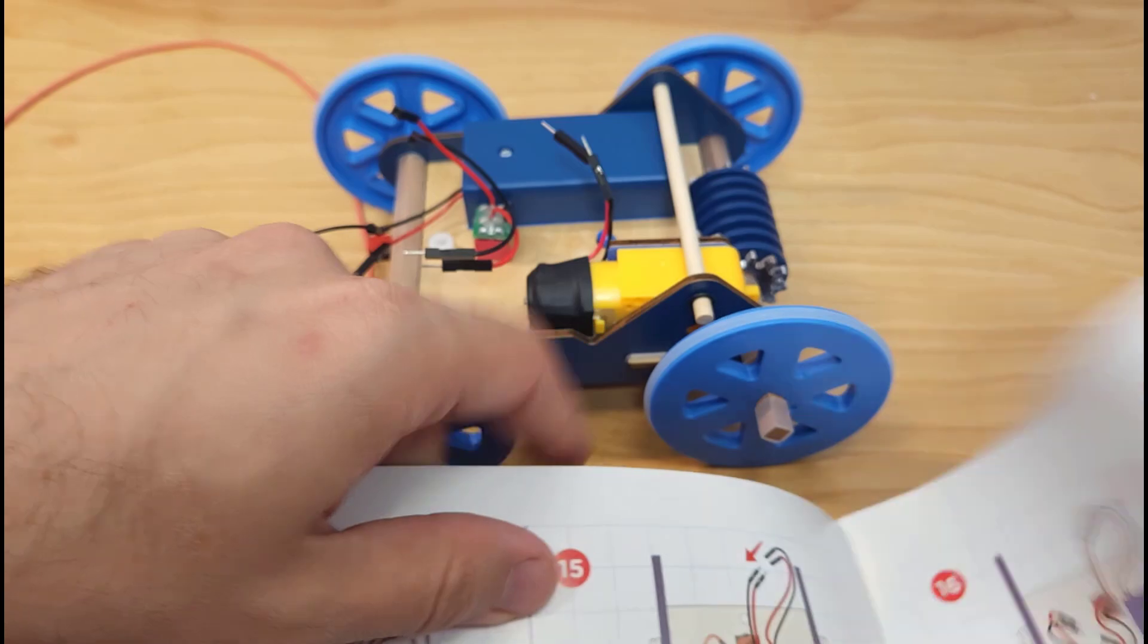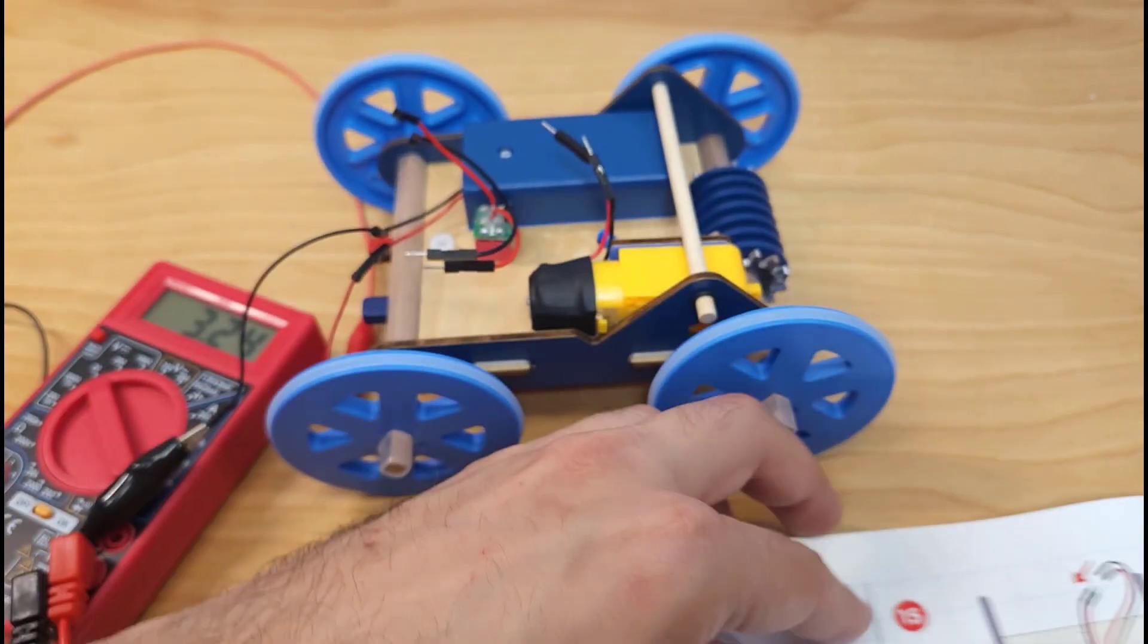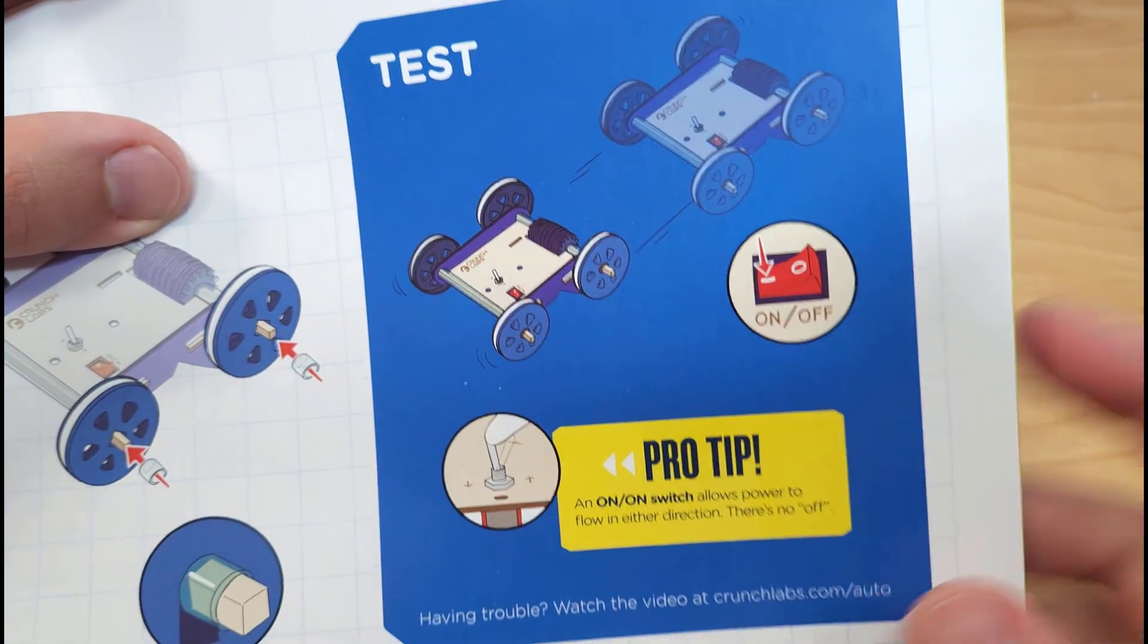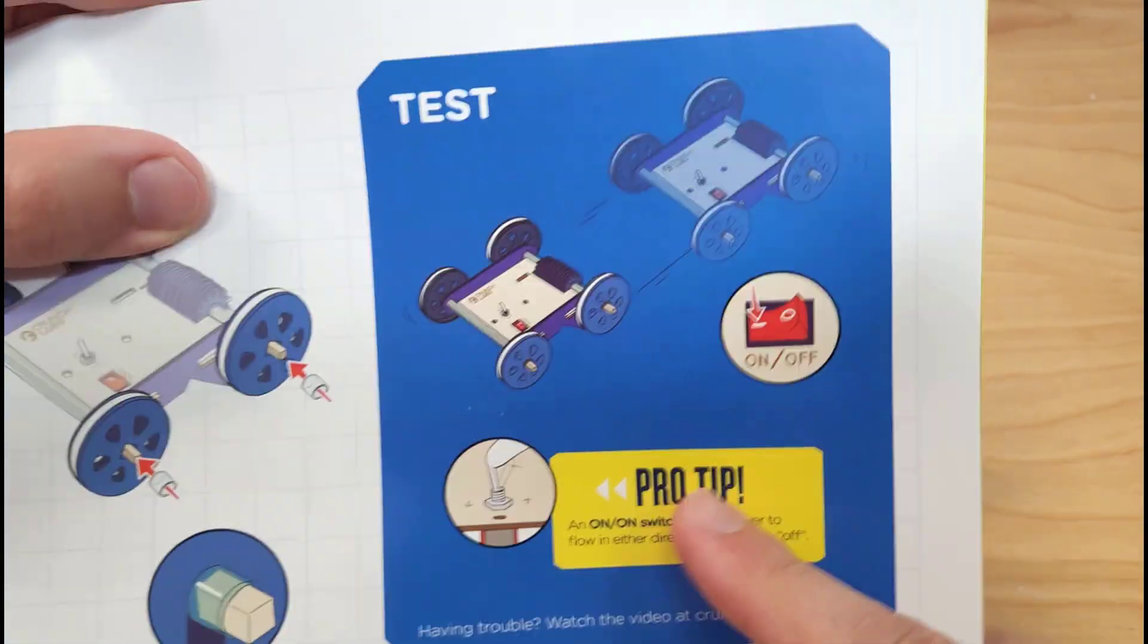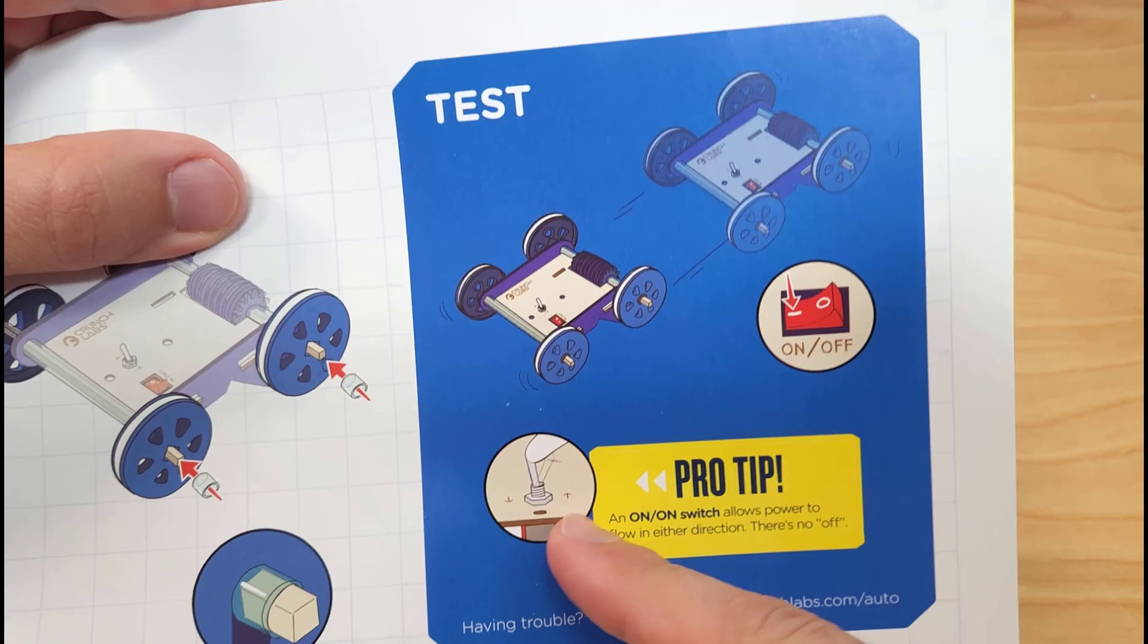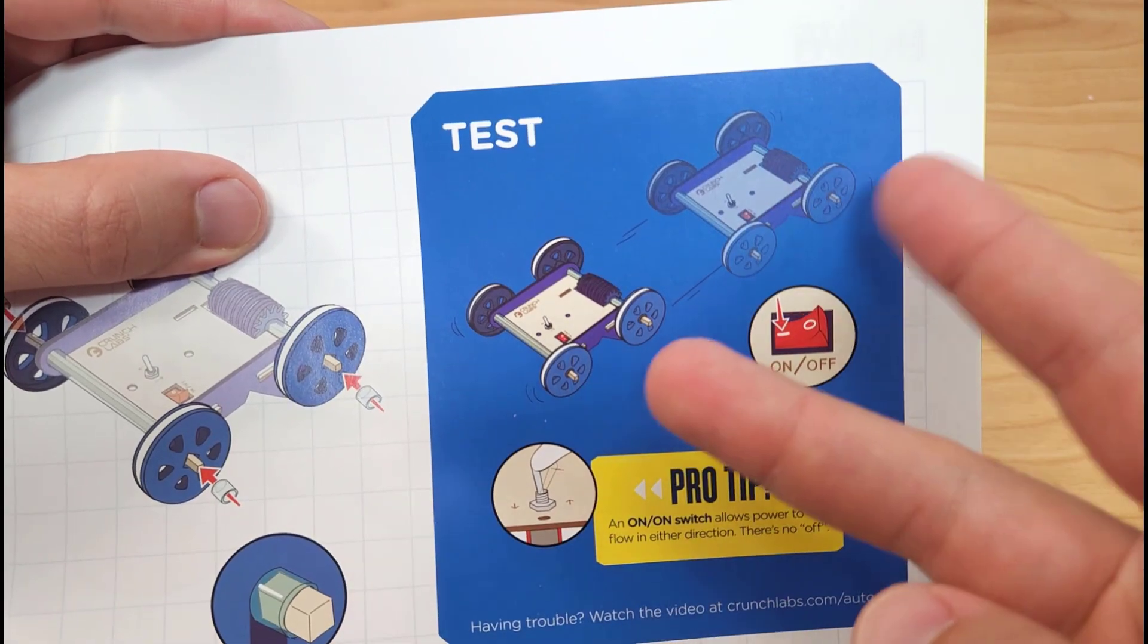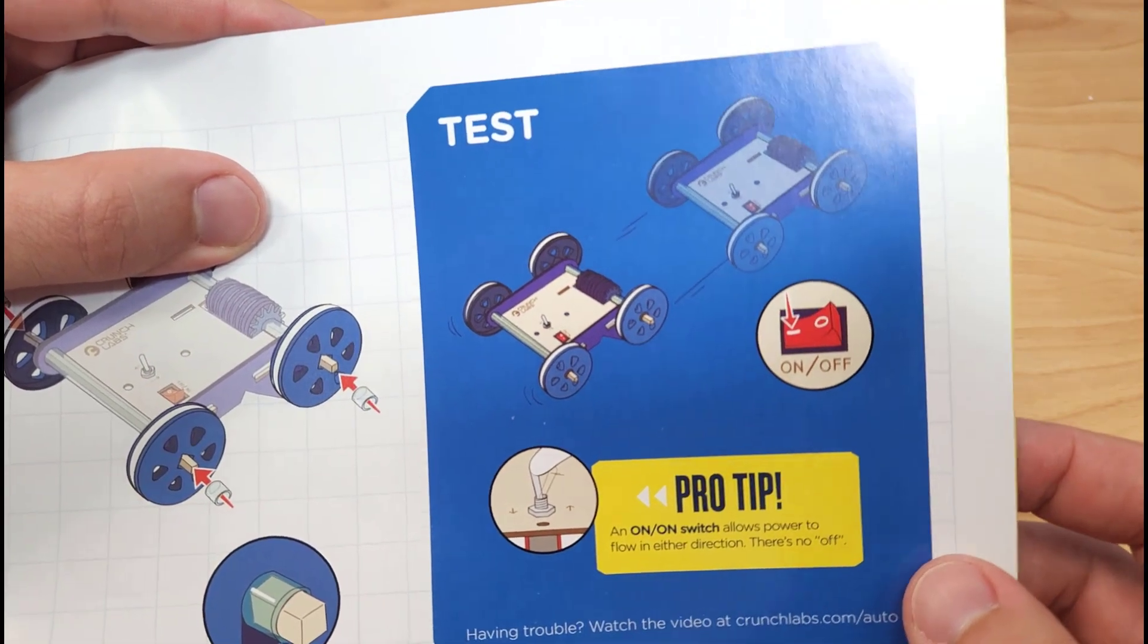And it describes in here somewhere, this is an on-on switch, so it never actually turns anything off. It just reverses the polarity of the connection to the motor, so it's always on, but it flips the polarity and makes the motor spin the other way.